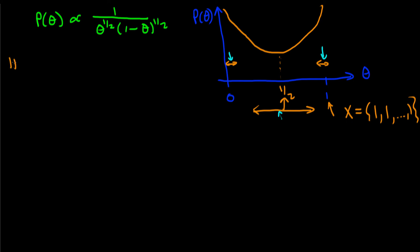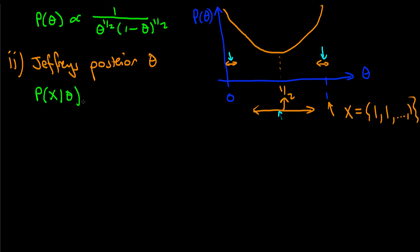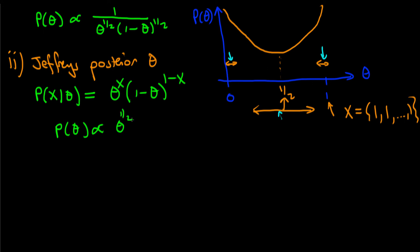Now I want to work out step two: the Jeffreys posterior in terms of theta. This is fairly easy because we already know the likelihood: p(x | theta) = theta^x times (one minus theta)^(one minus x). And the Jeffreys prior p(theta) has the functional form theta to the power minus a half times one minus theta to the power minus a half.